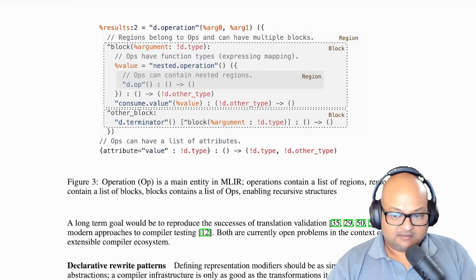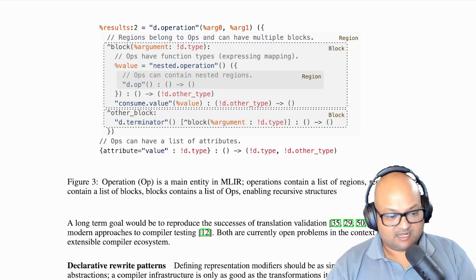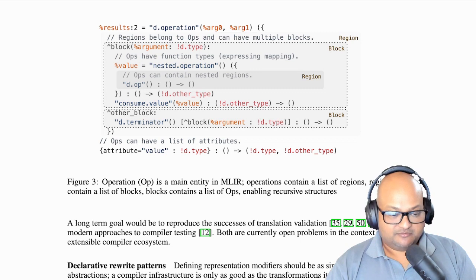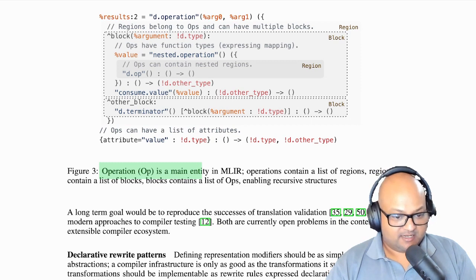So before we look at some of the design considerations, let's look at a small concrete example to look at some of the central constructs in MLIR. One of the most central constructs is an operation or an op. An op is the central unit of semantics in MLIR. Most other things, things like instructions or functions or modules,